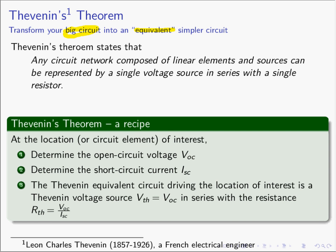His theorem states that any network composed of linear elements and sources — and the word 'any' covers a broad range of circuits — can be represented simply by a single voltage source in series with a single resistor. So Thevenin showed us that any arbitrary circuit, even one with literally millions of resistors and sources, can be represented by a single voltage source in series with a single resistor, and this simple circuit acts the exact same way, at least in an electrical sense, as the very large complicated circuit.